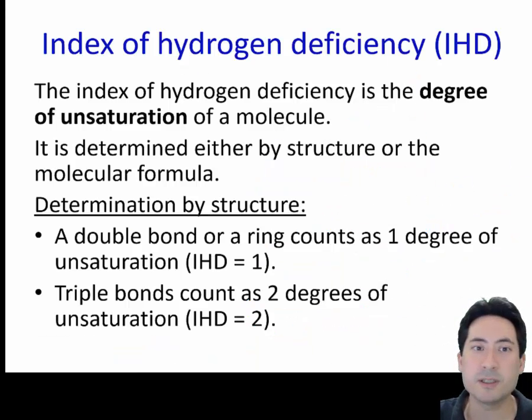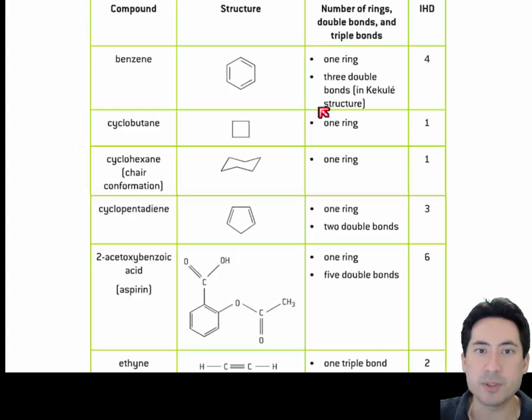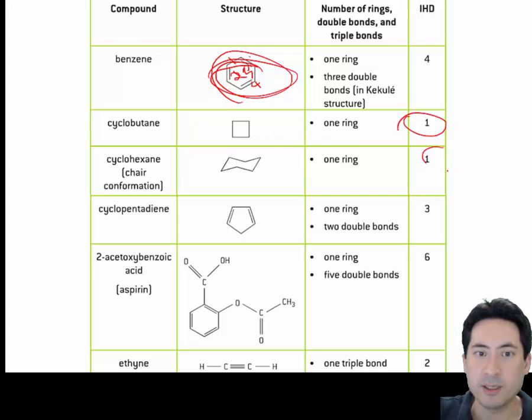Index of hydrogen deficiency now. This tells you how much unsaturation is in a molecule. So that can either occur by having double or triple bonds, or by having rings. So these are examples here. So you can see here, this one has an index hydrogen deficiency of four, because there's one ring. And there's one, two, three, four, one, two, three double bonds, and makes a total of four. So one ring, IHD 1, IHD 1, a ring and two double bonds, and this is getting a bit more complicated over here. So you can count them up when you have a molecule, and work out what the IHD is.